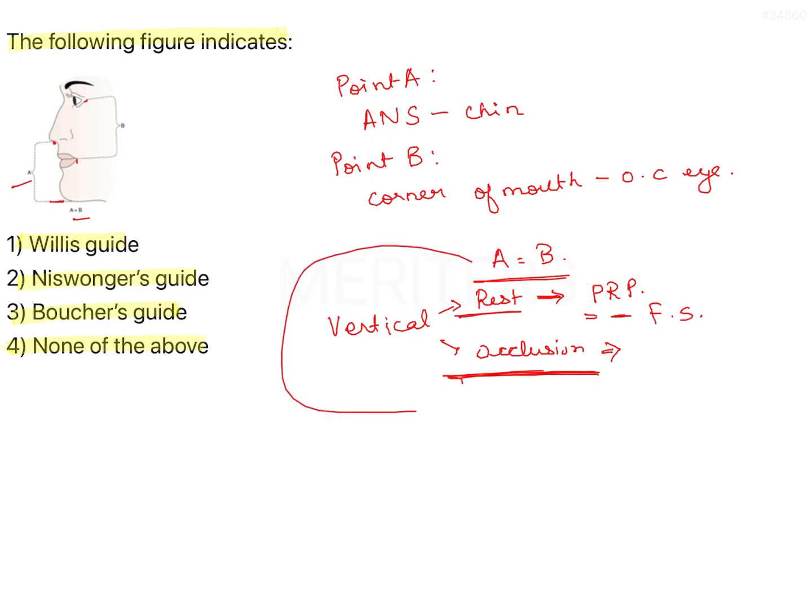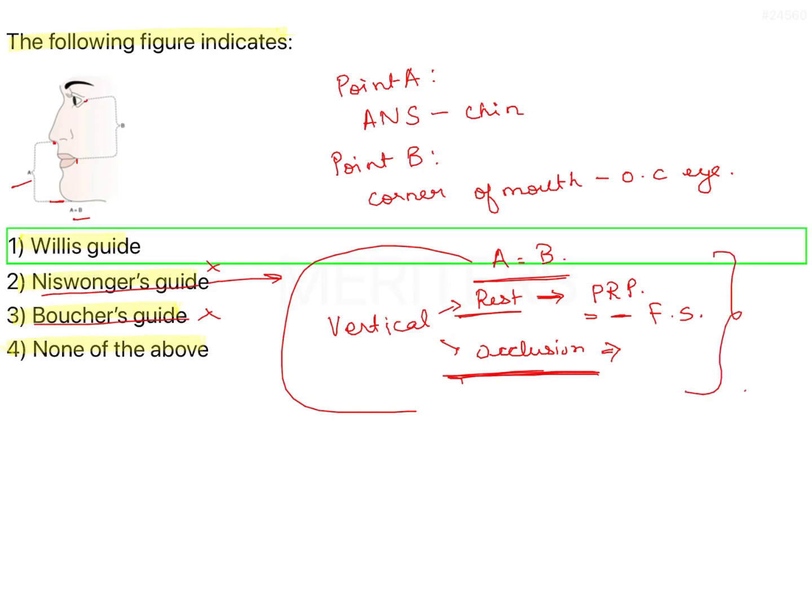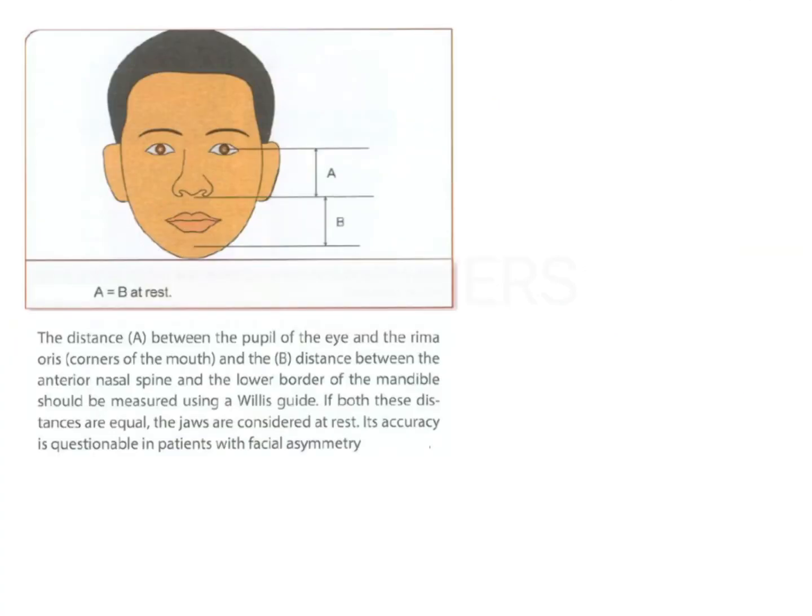This is known as Niswonger's method. There is nothing known as Boucher's guide or Niswonger's guide. There is Niswonger's method of vertical dimension assessment and this is their technique. The answer here is Willis guide. Willis said that the distance A to B is same.